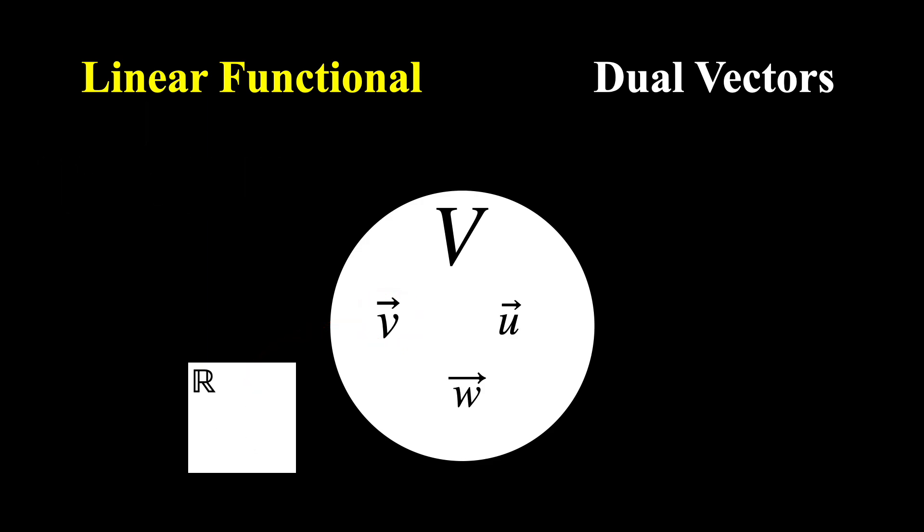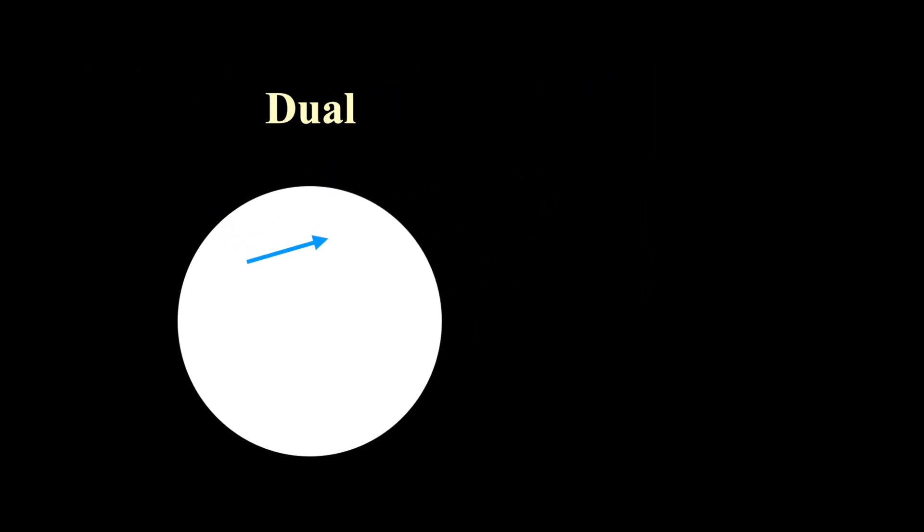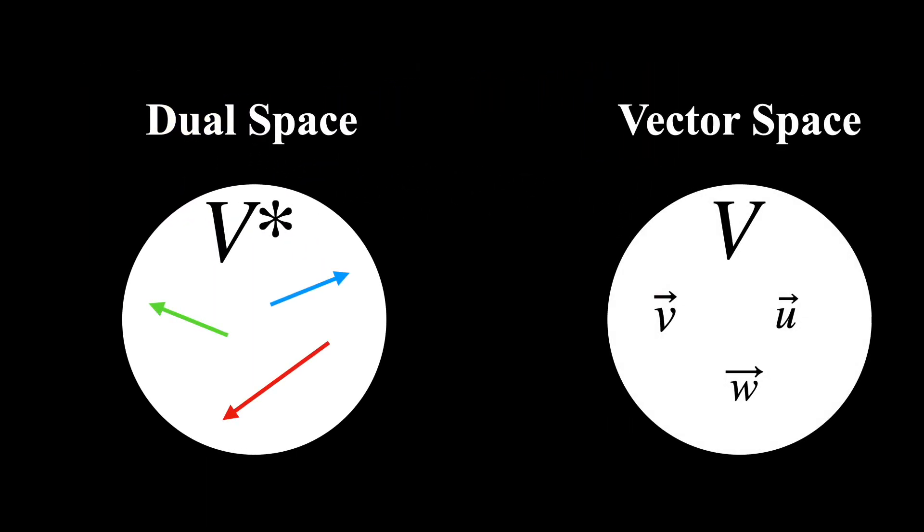Now these could be maps of any kind as long as they are linear. A couple examples would be the mean map, which sends all vectors to their mean value, or the zero map, which sends all vectors to the number zero. Now dual vectors are just these linear functionals, and the collection of all of the linear functionals that can be defined for a specific vector space actually forms itself another vector space, one that is called the dual space.